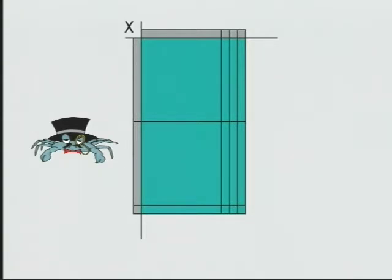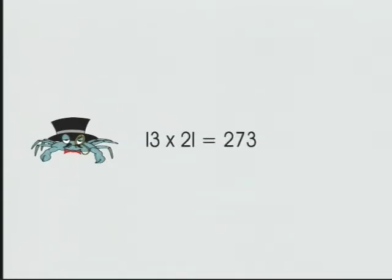To find the product, we simply combine our blocks and find 273. 13 times 21 equals 273.